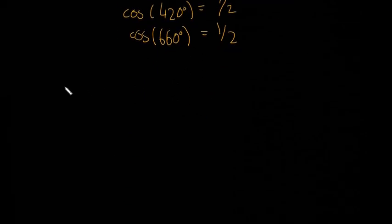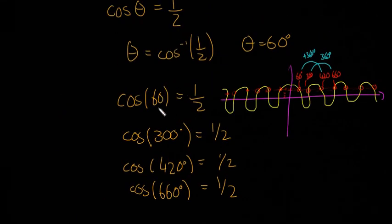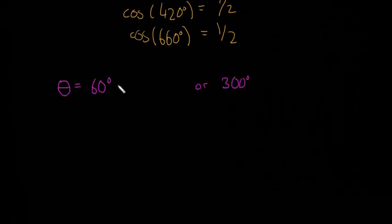So that solution is going to take the form of theta is equal to 60 degrees or 300 degrees, because there are the first two answers and they're less than 360, so it's always going to be like this - the first two answers - plus 360n or plus 360n, where n is any integer.